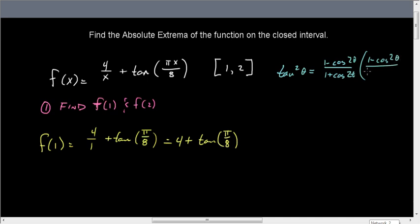If I multiply both the top and the bottom by 1 minus cosine 2 theta, 1 minus cosine 2 theta, then that's going to take me to 1 minus cosine 2 theta, that quantity squared. This is going to give me a difference of two squares, 1 minus cosine squared 2 theta.